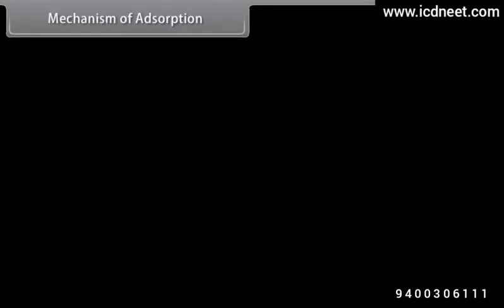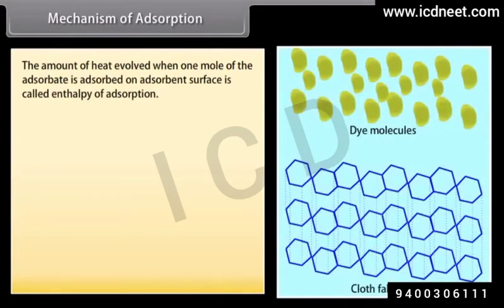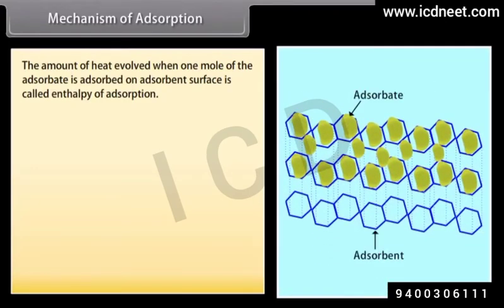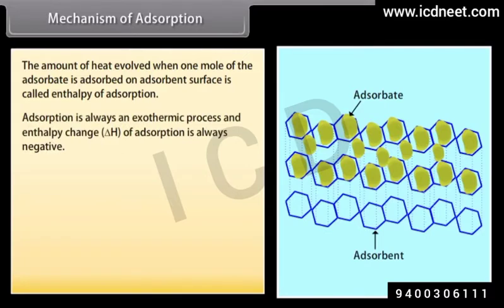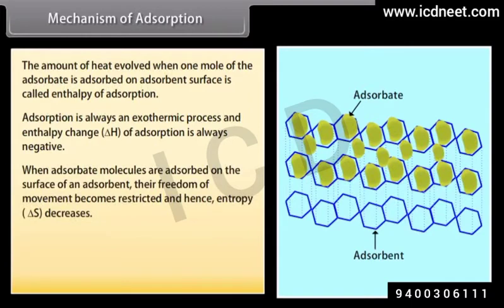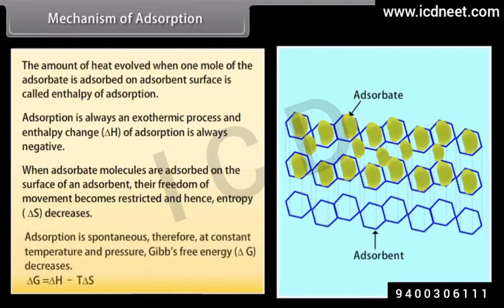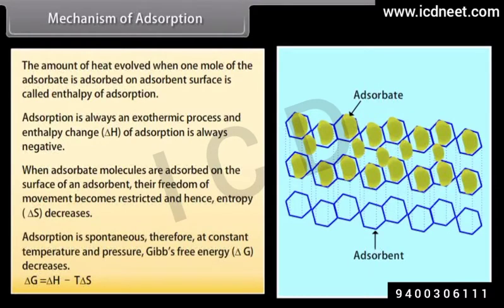The amount of heat evolved when one mole of the adsorbate is adsorbed on adsorbent surface is called enthalpy of adsorption. Adsorption is always an exothermic process; the enthalpy change of adsorption is always negative. When adsorbate molecules are adsorbed on the surface of an adsorbent, their freedom of movement becomes restricted and hence entropy decreases. Adsorption is spontaneous; therefore at constant temperature and pressure, Gibbs free energy decreases. Delta G equals Delta H minus T Delta S.